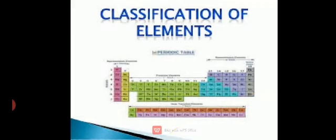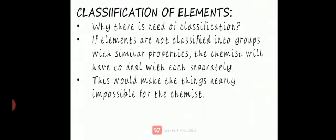Today we study topic 5.5: classification of elements. Why is there a need for classification? If elements are not classified into groups with similar properties, the chemist will have to deal with each element separately. A chemist is a person who studies medicines and chemicals. This would make things nearly impossible, so classification is important for ease and to identify elements quickly.